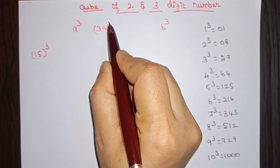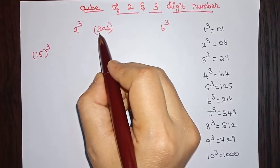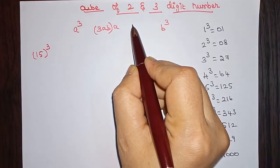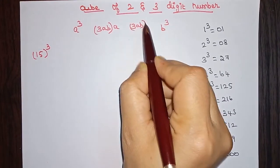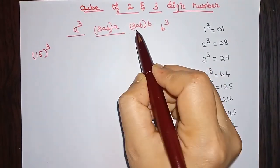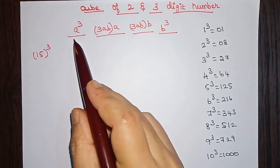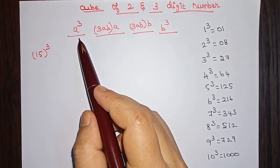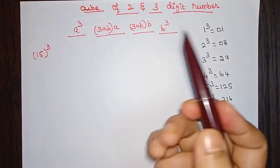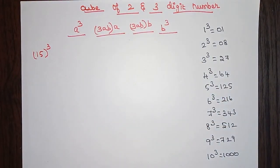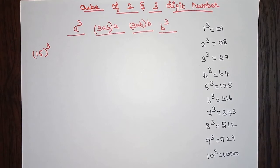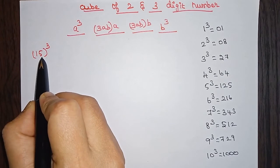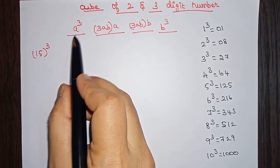...3ab. So 3ab is taken as the common multiplication term, and with this term we multiply a and then multiply b. After finding all these values, we need to sum all of them — just like we did when finding the square of two and three digit numbers. So let us solve this problem to see how to find the cube. First, let us take the value 1 as a and the value 5 as b.